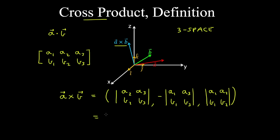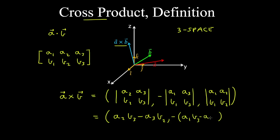Expanding this gives the definition of the cross product in component form. Getting the determinant of a 2×2 matrix includes multiplying the cross terms and subtracting the result. So we get a2·b3 minus a3·b2 for the first component, the negative of (a1·b3 minus a3·b1) for the second, and a1·b2 minus a2·b1 for the third.